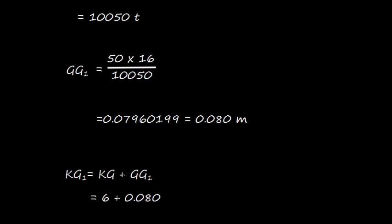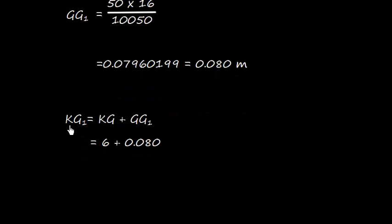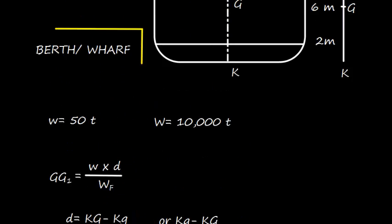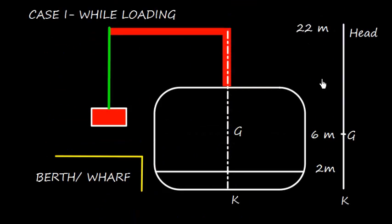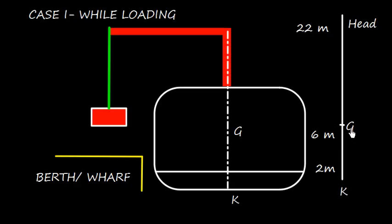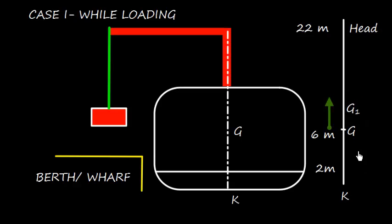Well, the value of KG1, that is new KG, will be 6 plus 0.080, and that makes sense also, because here the weight is loaded at the head. So the GG1 will shift upward because the weight is loaded at this level.